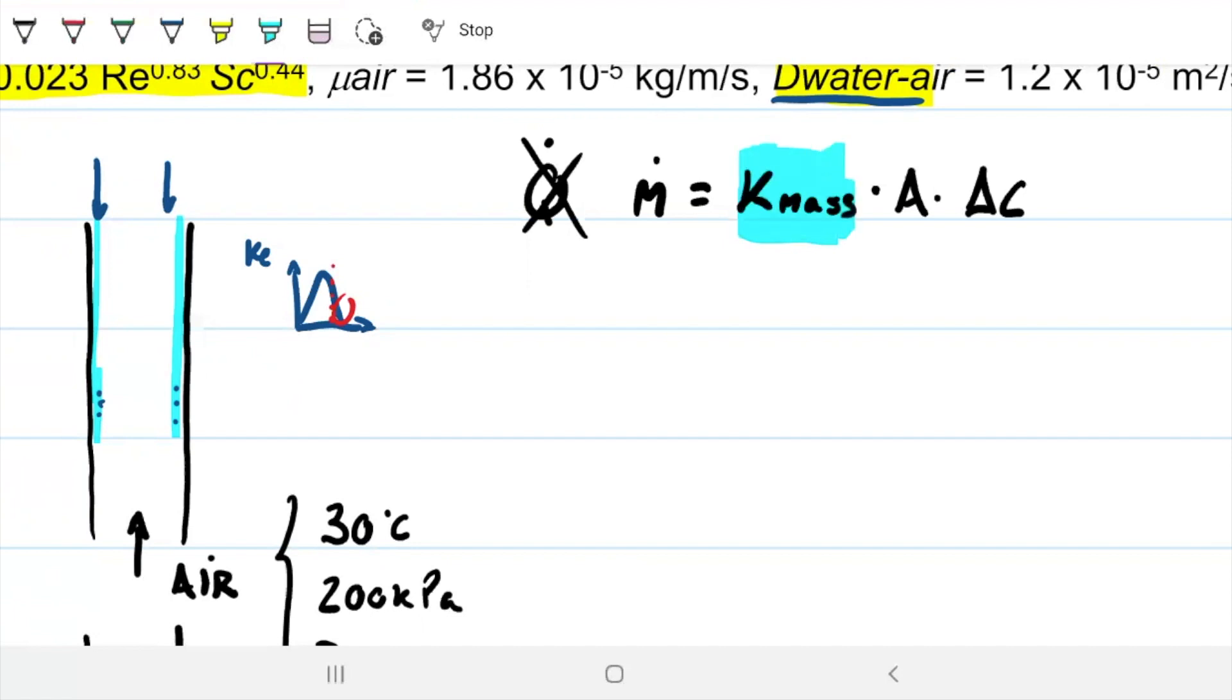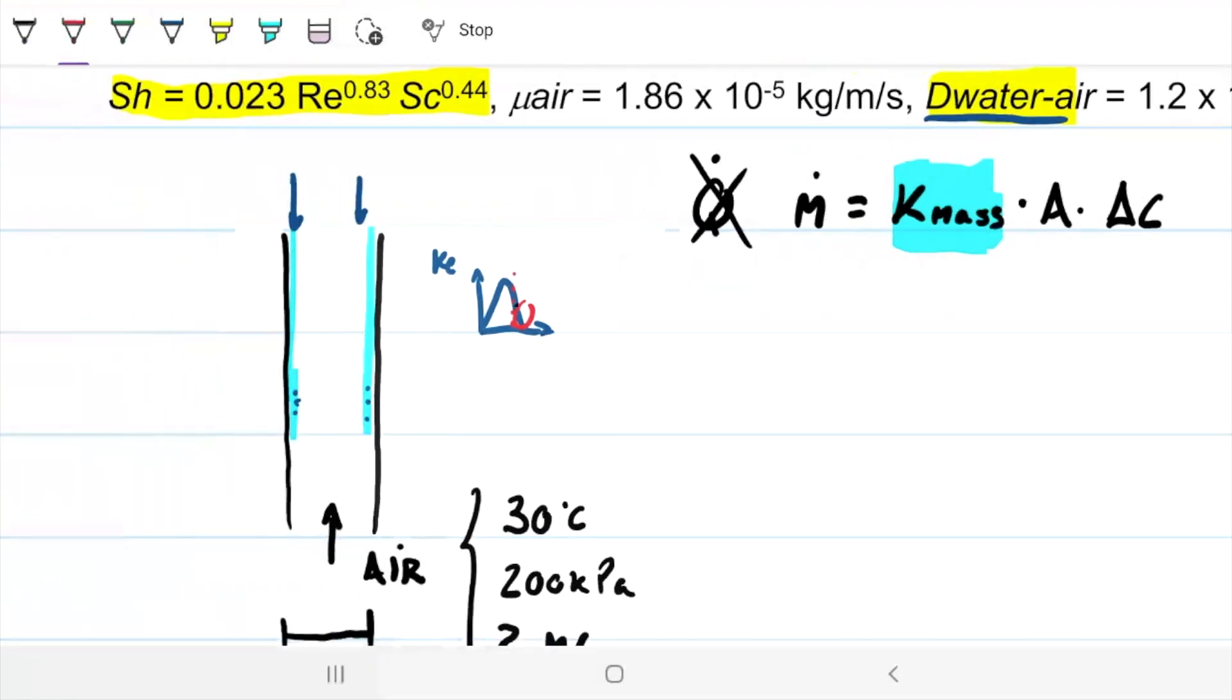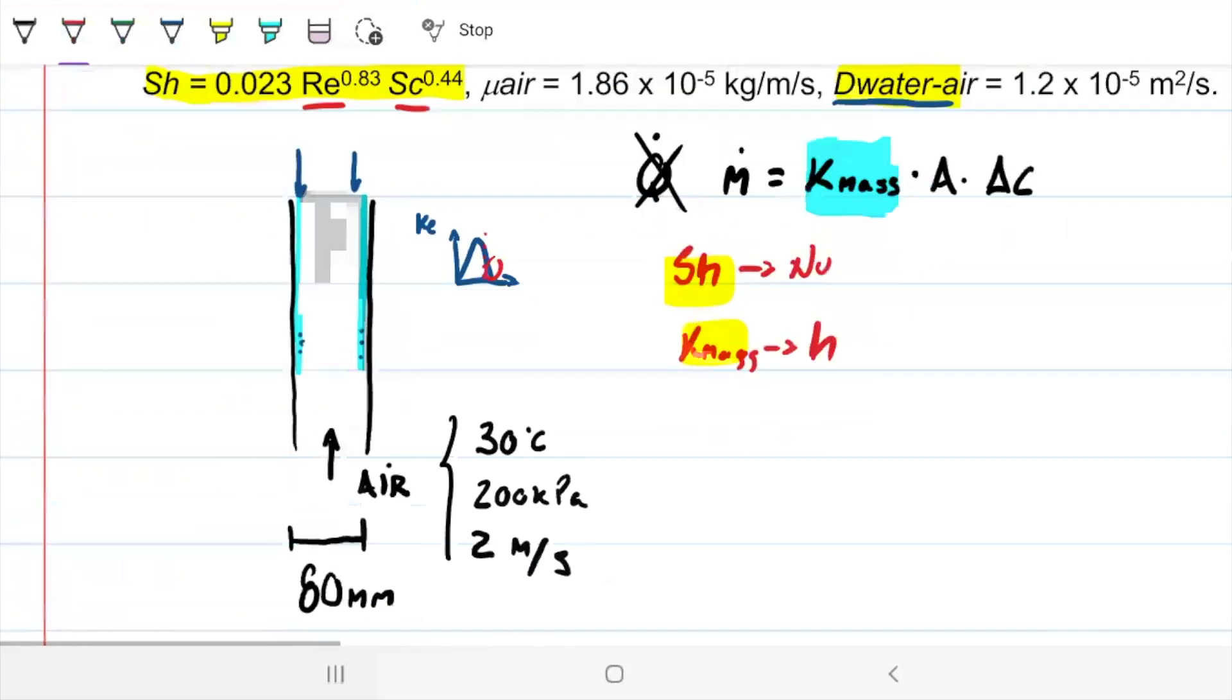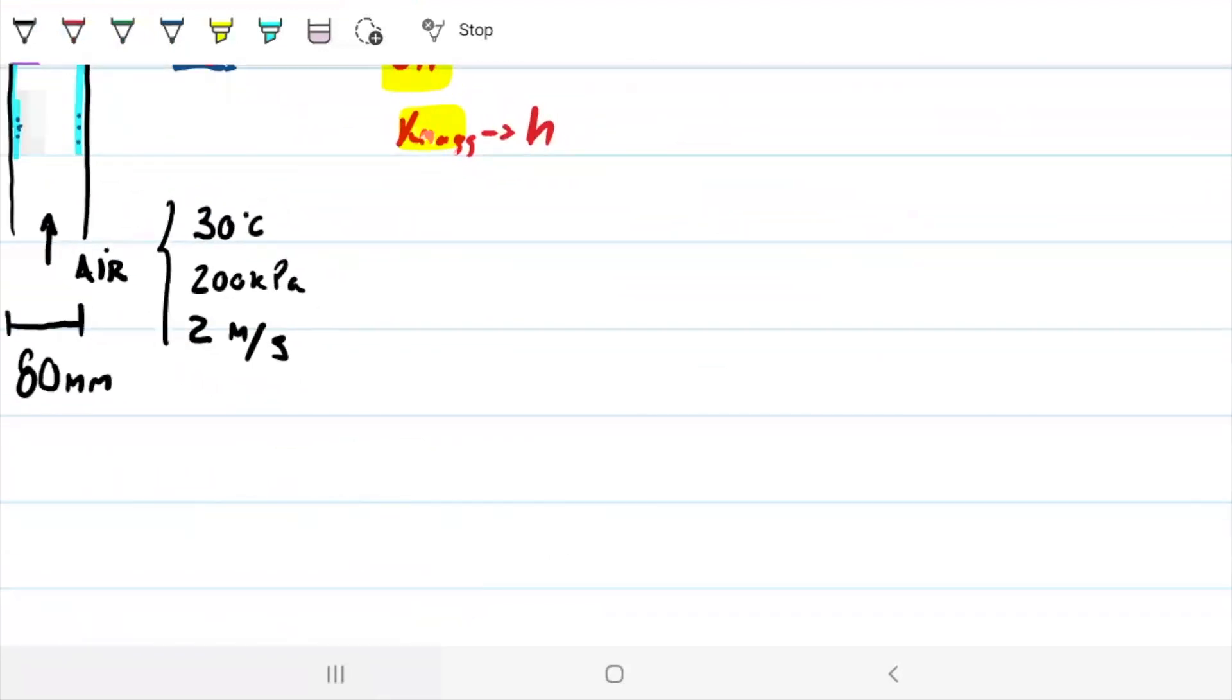Now, to find this guy, what we're going to do is we're going to use our Sherwood number. Because if you guys recall, Sherwood is to Nusselt, like K_mass is to h, right? So if we can find Sherwood, we can find our K. And to find Sherwood, we need Reynolds, and we need Schmidt's number. So it's just a matter of finding Schmidt's and Reynolds, and then we can find Sherwood. With that, we can find K. Right? So let's start with first things first.